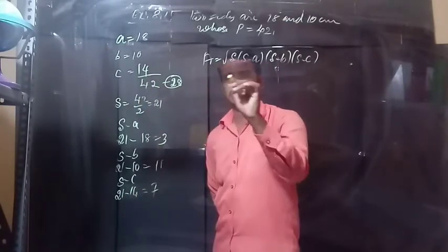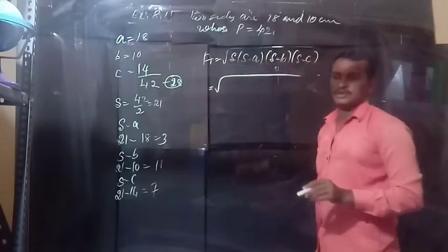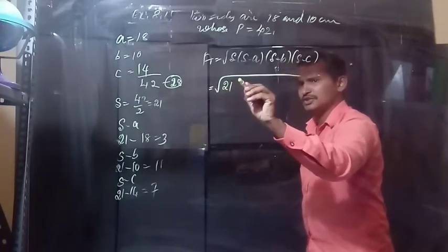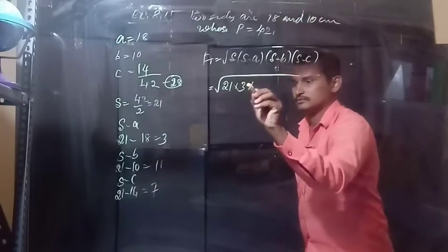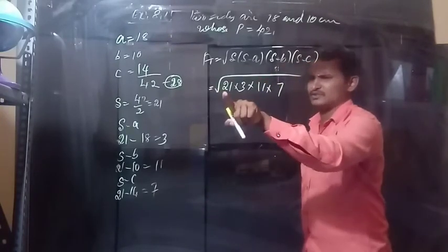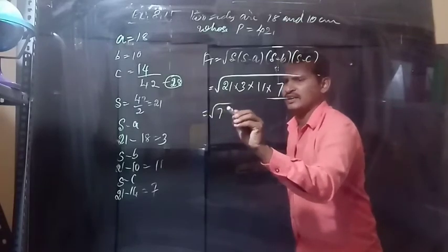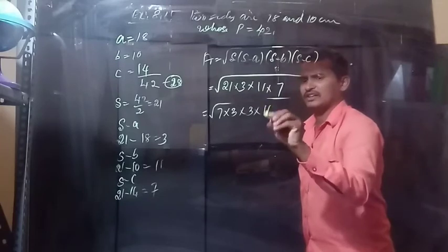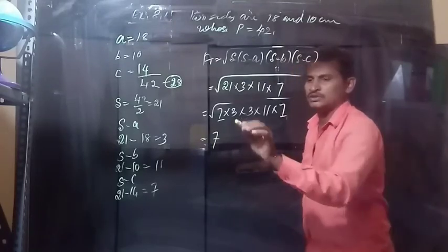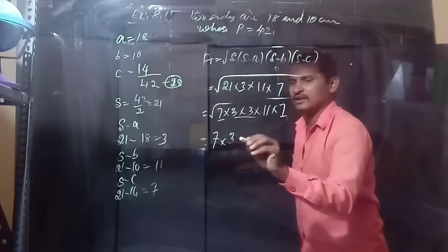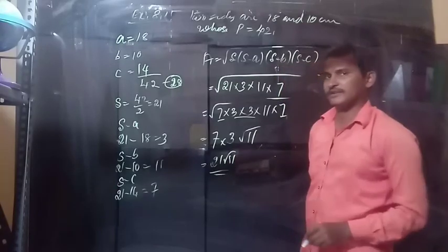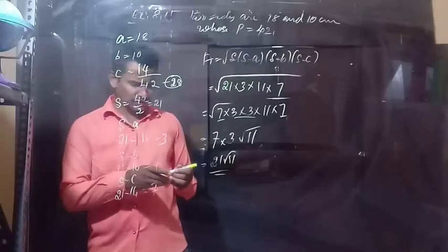Continuing: S−a = 3, S−b = 11, S−c = 7. Substituting these values, we complete the area calculation using Heron's formula. It is not easy, but it is easy once you know the steps.